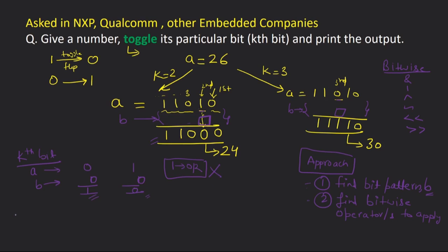Now let's try the XOR operator. A can be 0 or 1 and we want the output toggled. In XOR, if bits of A and B are different we get 1, and if they are the same we get 0. So I should place 1 in B at the kth position: XOR of 0 and 1 gives 1, XOR of 1 and 1 gives 0 — that's correct. So XOR works and in the bit pattern B, at the kth position I should put 1.